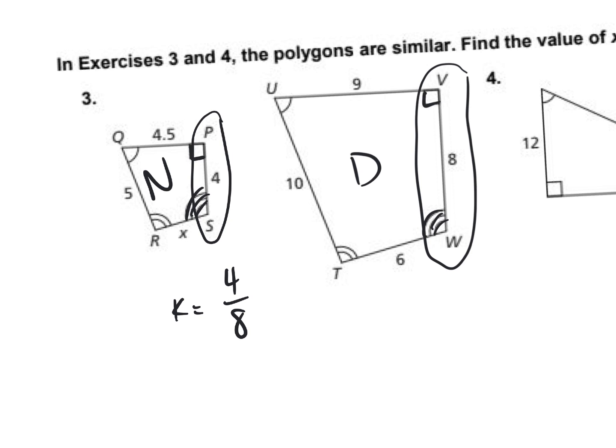Simplify it. What does it simplify to? One over two. Guys, if you made the other shape your numerator — if you made the larger one your numerator — your scale factor would be two. That's also correct. It's not like one is wrong and the other one's right; they're both correct. It depends on which one you made your numerator, but we do have to be consistent.